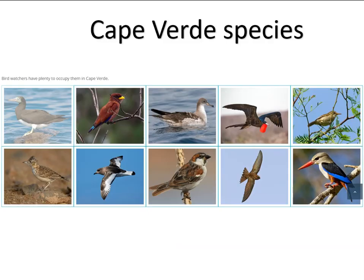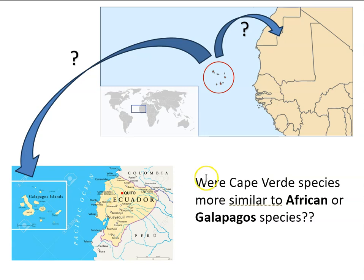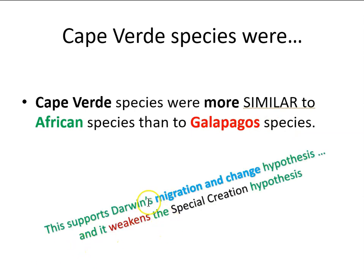On the Cape Verde Islands Darwin found a variety of bird species — notably different from finches and mockingbirds — as well as a species of skink and a gecko. The key question: were the Cape Verde species more similar to African or to Galapagos species? The results of Darwin's comparison were clear: the Cape Verde species were more similar to African species than to Galapagos species. This supported Darwin's migration and change hypothesis and weakened, in Darwin's mind, the special creation hypothesis.